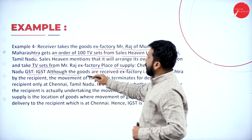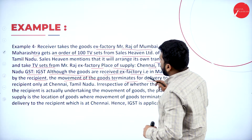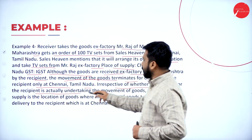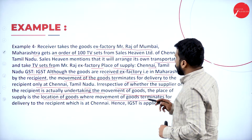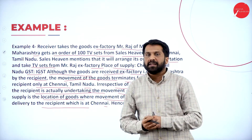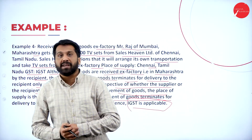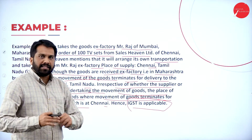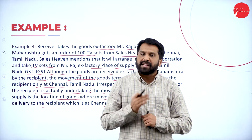GST applicable: IGST. Although the goods are received ex-factory — that is in Maharashtra — by the recipient, the movement of the goods terminates from delivery to the recipient only at Chennai. Because irrespective of whether the supplier or recipient is actually undertaking the movement of goods, the place of supply is the location where the movement of goods terminated for delivery to the recipient, which is Chennai. Hence IGST is applicable. From Maharashtra to Chennai — two different states — so IGST will come.